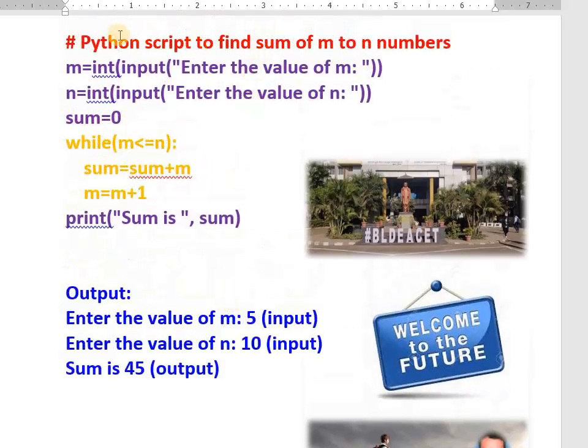We read the M value. We read the N value. We take sum equals to 0. Instead of printing M, what I am doing here is that previous sum plus next value. Sum equals to sum plus M. See here. First time sum is 0.